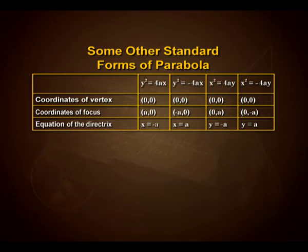The equation of the directrix for the four different parabolas: for y² = 4ax it is x = −a; for y² = −4ax it is x = a; for x² = 4ay it is y = −a; and for x² = −4ay the equation of the directrix is y = a.